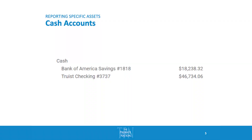For a bank account, you're simply going to list the institution, the type of account it is, the last four digits of the account number, and then the value of that account as of the date that you received it from the estate.